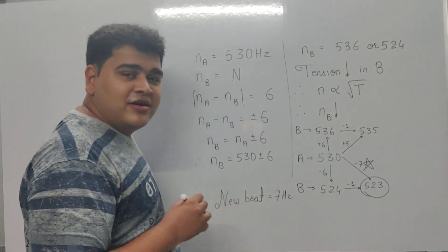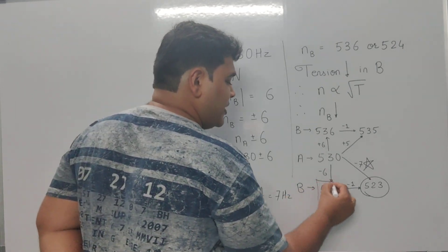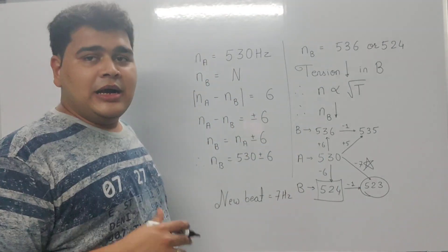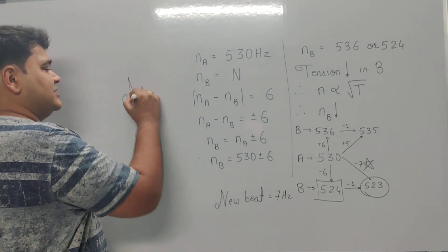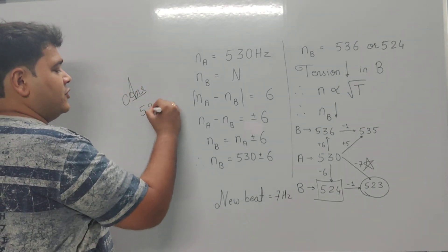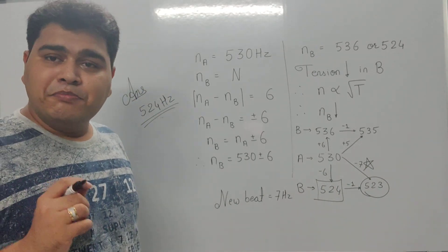That means 524 has to be our final answer. So the answer is 524 Hz as the original frequency of B.